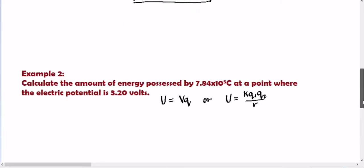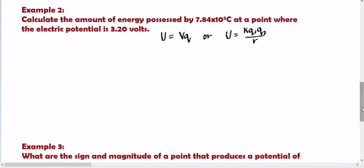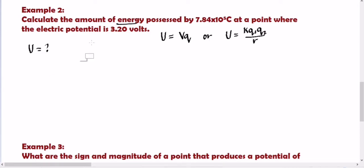Let's have the second example. Calculate the amount of energy possessed by 7.84 times 10 raised to 5 coulombs at the point where the electric potential is 3.20 volts. So, what is asked in the question? Calculate the amount of energy — so electric potential energy ang kailangan natin, denoted as U. The given are: 7.84 times 10 raised to 5 — that is Q, the charge.